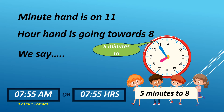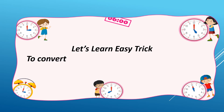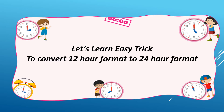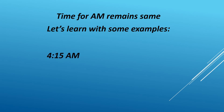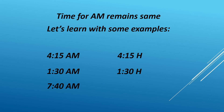Time for AM remains the same. Let's learn with some examples. 4:15 AM is written as 04:15H, but we read it as 415 hours. 1:30 AM is written as 01:30H, but we read it as 130 hours. 7:40 AM is written as 07:40H, but we read it as 740 hours.